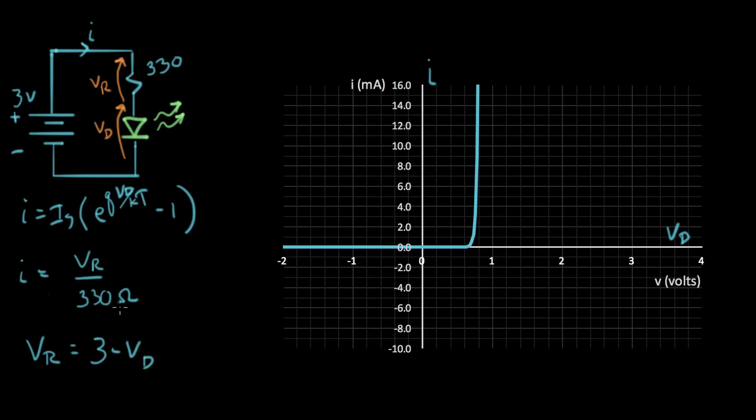So I can derive VR as 3 volts minus VD. And let's put this into this I expression here. The Ohm's law expression now becomes I equals VR is replaced with 3 minus VD all over 330 ohms. And let's work on this a little more.